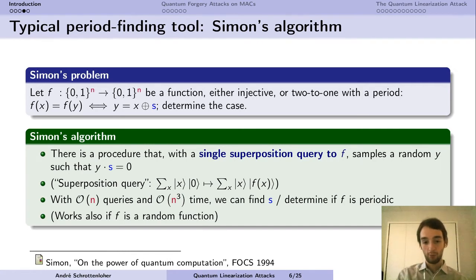And of course if you do that n times or a linear number of times you can have enough information to recover the period with a linear system. Now what we mean by superposition query is you actually apply f on a quantum state. And this quantum state can be an arbitrary superposition of all possible input values. This is why we say superposition queries. It's important to note that the original problem wasn't a cryptographic problem because the function was two-to-one, but if f is a random function with the only promise that it has a period, the algorithm is still going to work.